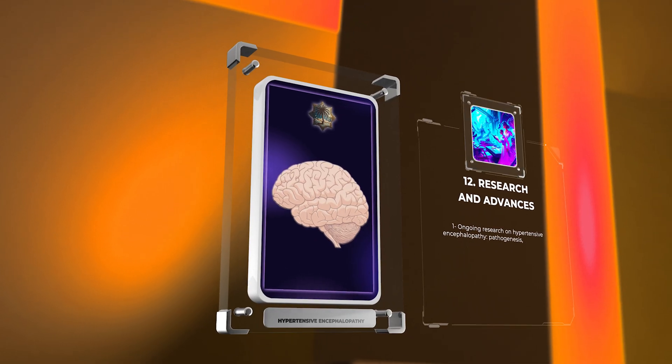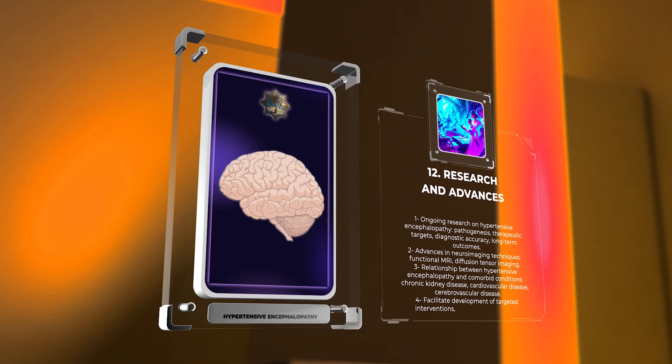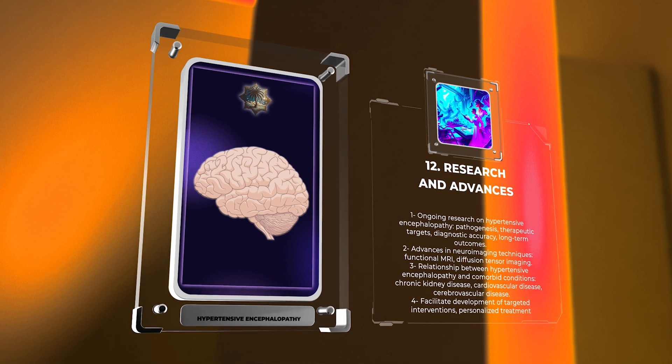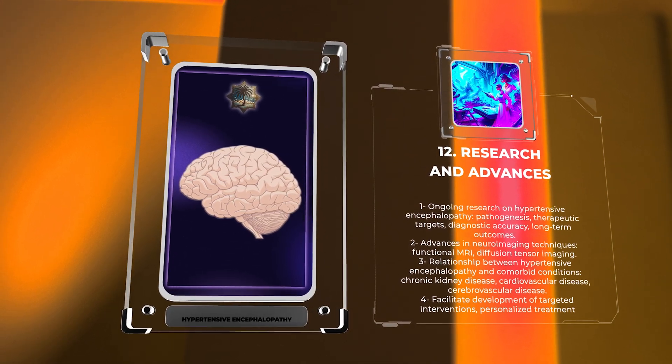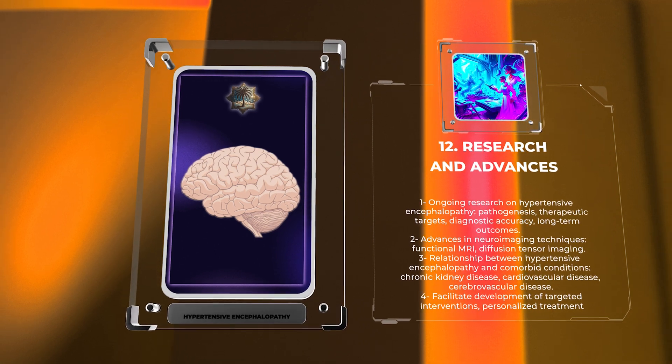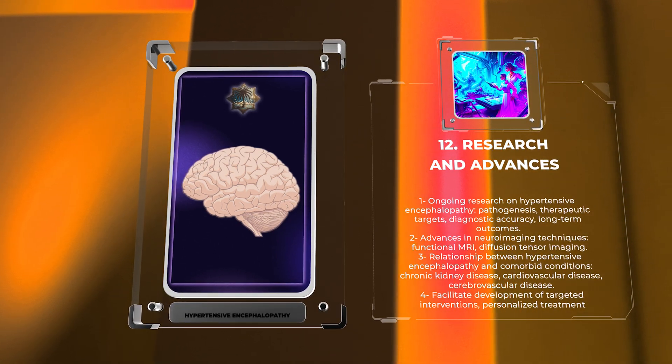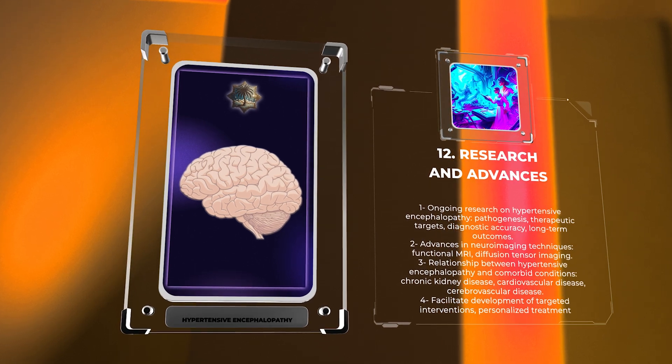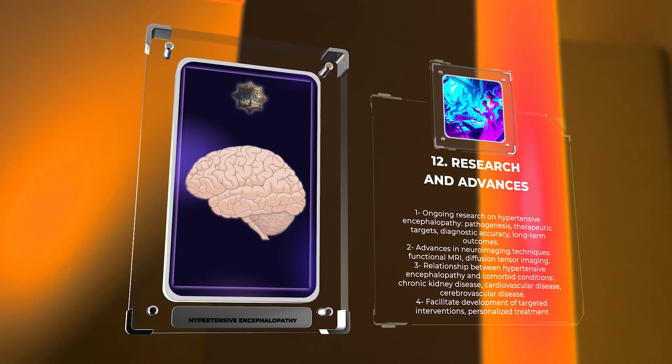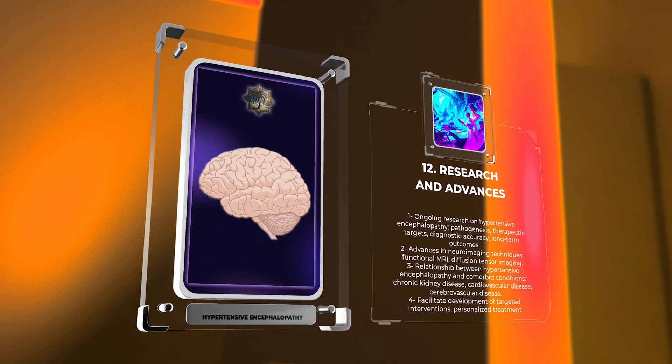Ongoing research on hypertensive encephalopathy focuses on understanding its pathogenesis, identifying novel therapeutic targets, improving diagnostic accuracy, and evaluating long-term outcomes. Advances in neuroimaging techniques, such as functional MRI and diffusion tensor imaging, have provided valuable insights into the underlying cerebral changes associated with hypertensive encephalopathy.